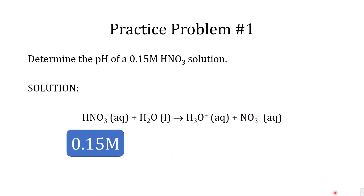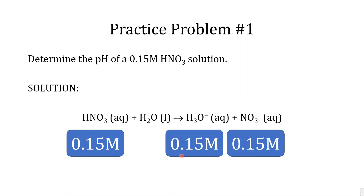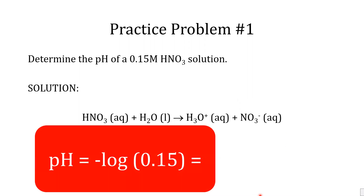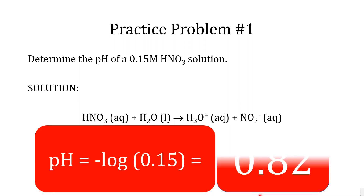Practice problem one is to determine the pH of a 0.15 molar HNO3. Looking at the ionization of HNO3 in liquid water producing H3O+ and NO3- ions, 0.15 molar HNO3 produces 0.15 molar hydronium ion and 0.15 molar nitrate ion. Since HNO3 is a strong acid, one can directly determine the pH of this solution. The pH equals the negative log of the hydronium ion concentration, or the negative log of 0.15, which equals 0.82.